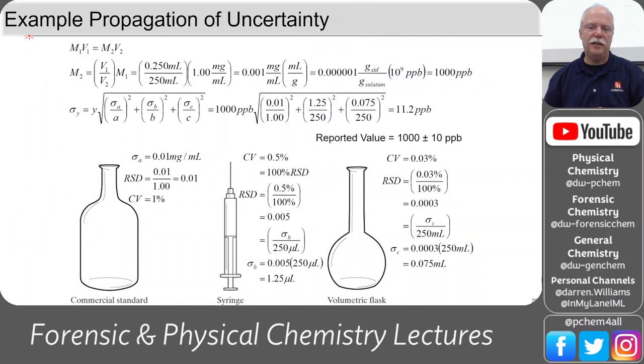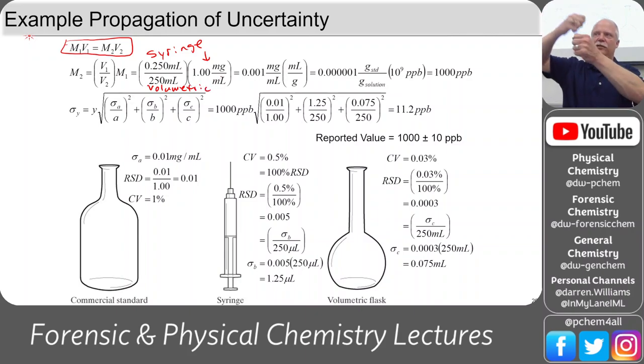So here's our dilution calculation. So remember, for dilution, M1, V1 equals M2, V2. Only we don't have to use molarities. We can use these other concentrations. So M2 is equal to V1 over V2 times M1. So this was our standard concentration. This was the syringe. And this is the volumetric. Right? We took a syringe of our standard, put it in a volumetric, and diluted to the mark. And we made a stock solution.